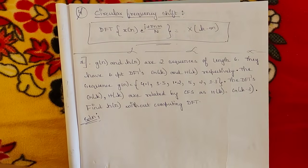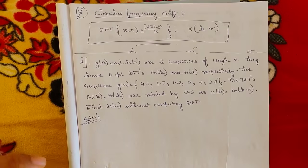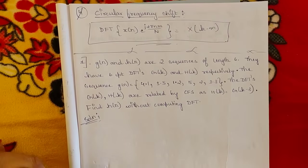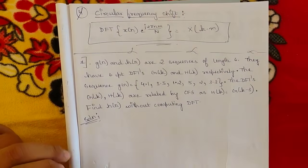Hello everyone, welcome to this new session. In our previous video we discussed the circular time shift property from module 3 — one of the pending properties of DFTs. We discussed it along with one example problem, seeing how to solve it without computing DFTs and by using the property. This session covers the next property: circular frequency shift.